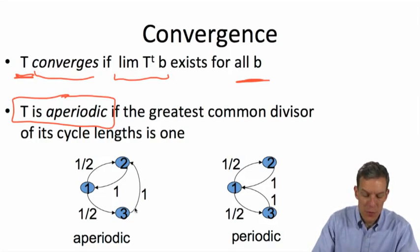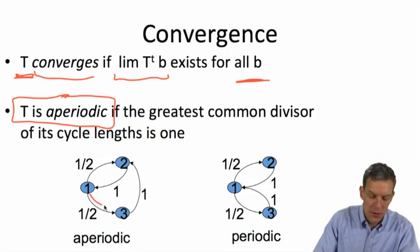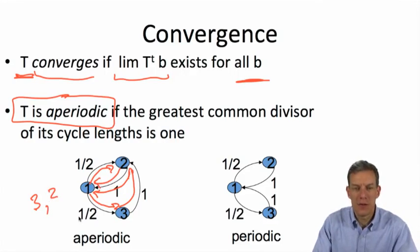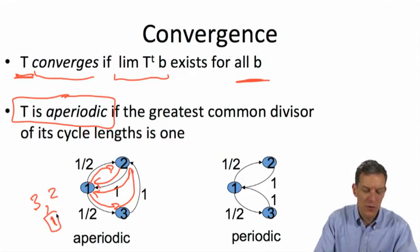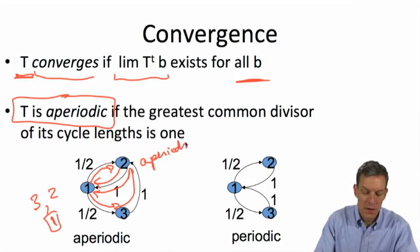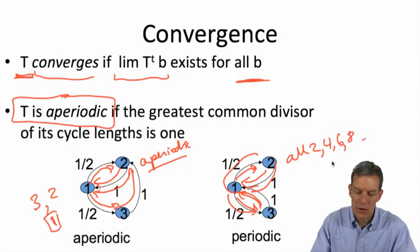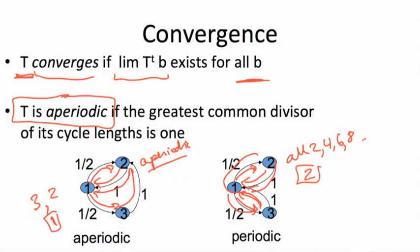We say that T is aperiodic if the greatest common divisor of all its simple cycles is 1. For example, in the first network we have a cycle of length 3 and a cycle of length 2; the GCD of 3 and 2 is 1, so it is aperiodic. In the second network, we have cycles of length 2 and length 4 — all cycles are even. The greatest common divisor is 2, so this network is periodic, not aperiodic.